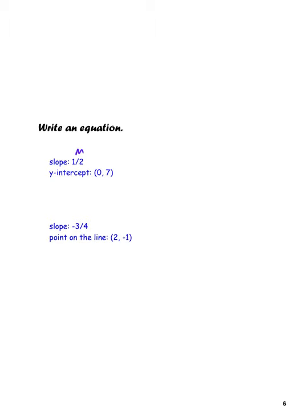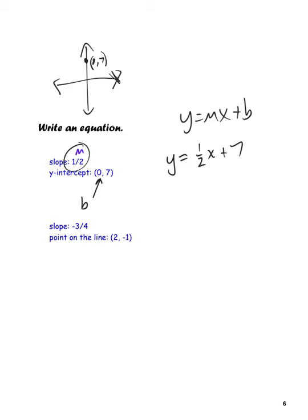If you're given a slope and a y-intercept, jump straight to y = mx + b. Here, the slope m is given, and the y-intercept tells us the point (0, 7) is on the graph — so b = 7. The equation is y = (1/2)x + 7. Since the x-value of the given point is 0, the y-value is directly the y-intercept.